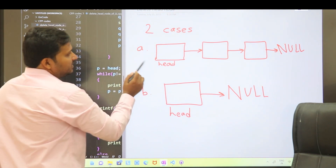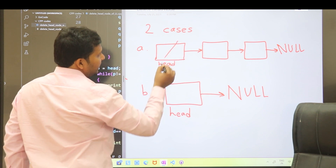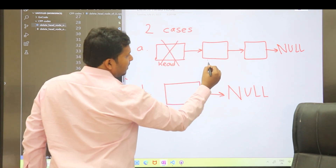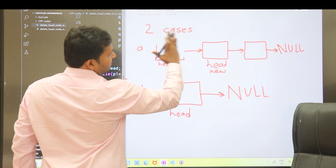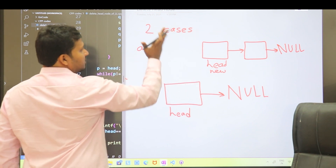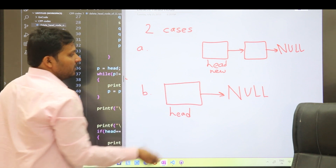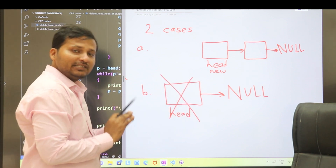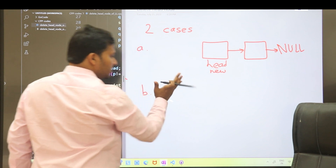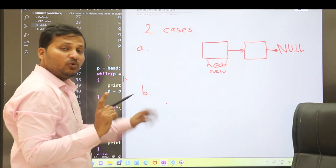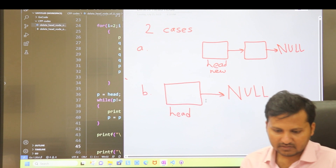The first case is if there are more than one nodes in the linked list. In that case we will delete the head node and make the second node the new head node. In the second case, if there is only one node in the linked list, when we delete that node the entire linked list is deleted, because that one node itself is the head node.